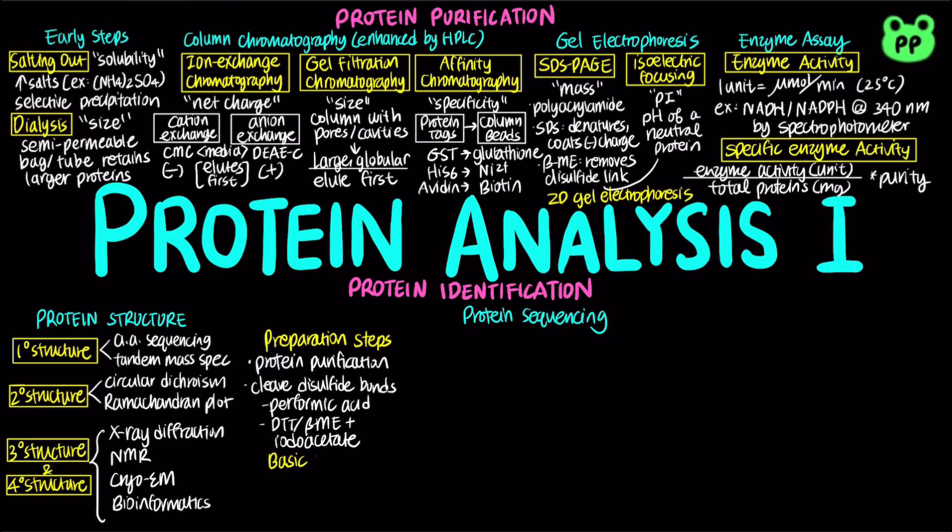Two basic properties can be determined to confirm the identity of the protein. The amino acid composition of the protein can be determined by hydrolyzing a sample of the protein in 6-normality hydrochloric acid and putting it through an amino acid analyzer. The relative molecular weight of the protein can be determined by SDS-PAGE or gel filtration chromatography.